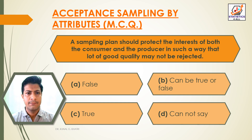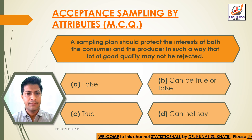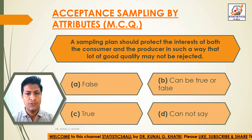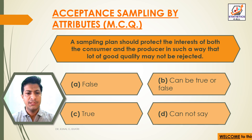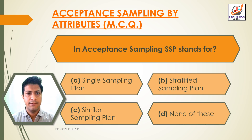Question 7: A sampling plan should protect the interest of both the consumer and the producer in such a way that a lot of good quality may not be rejected. Option A: False. Option B: Can be true or false. Option C: True. Option D: Cannot say. The answer is Option C — True.